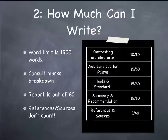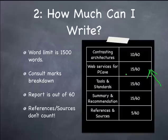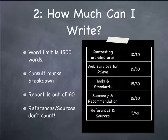The next thing to do is consult the marks breakdown. Each section is worth a certain number of points. Contrasting architectures was worth 10 points out of 60. The web services for Picture Cave section was 15 out of 60. Tools and standards, another 15 out of 60. Summary and recommendation, another 15 out of 60. Finally, 5 points out of 60 were allocated for references and sources. When it comes to calculating how many words you can use, don't worry about the references and sources — so we're going to pretend the calculation is out of 55 marks instead.